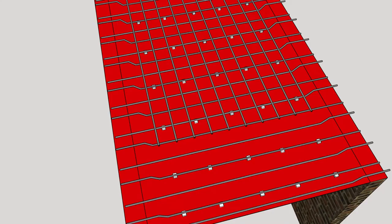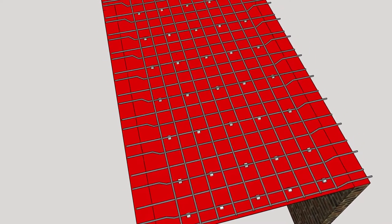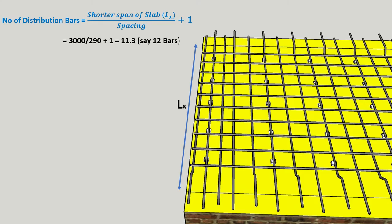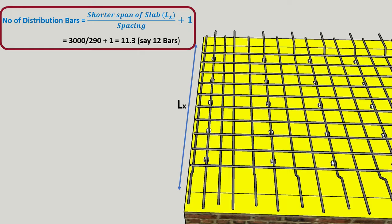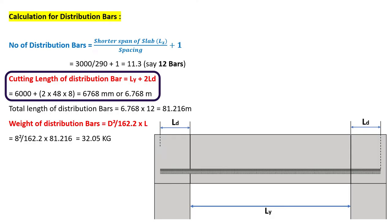Now the calculation for distribution bars. The number of distribution bars equals shorter span divided by spacing plus 1: 3000 / 290 + 1 = 11.3, say 12 bars. The cutting length of distribution bars equals longer span plus 2 times development length: longer span is 6000 mm, development length is 40D where D is 8 mm, giving a total cutting length of 6.768 meters.